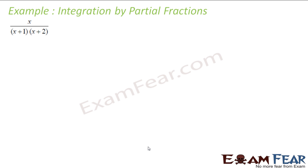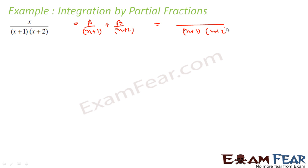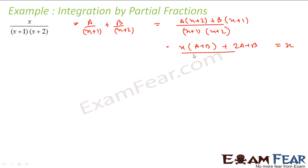Let us try to solve a few problems. The first one is of the form x / [(x + 1)(x + 2)], which is the (x − a)(x − b) form. So I write the integral as A/(x + 1) + B/(x + 2). Cross-multiplying, this gives x = A(x + 2) + B(x + 1).